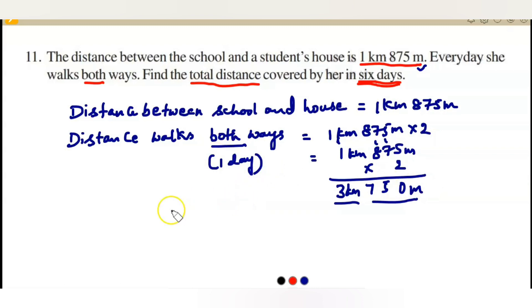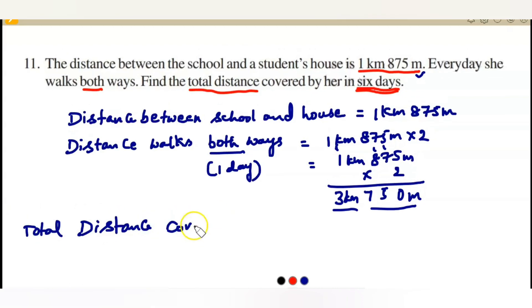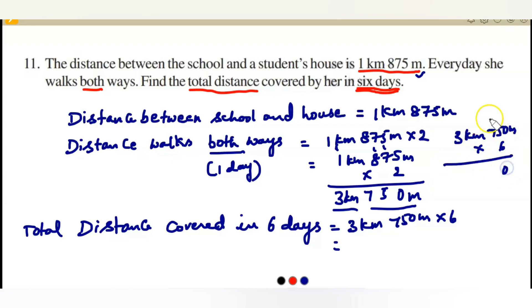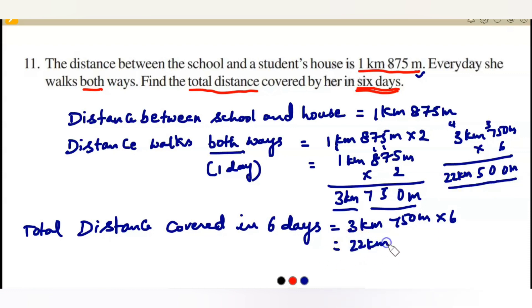Now the total distance covered in 6 days equals 3 km 750 m multiplied by 6. Multiplying: 6 zeros are 0; 6 fives are 30, carry 3; 6 twos are 12 plus 3 is 15 — giving 500 meters; 6 threes are 18 plus 4 is 22 kilometers. So in 6 days she walks 22 kilometers 500 meters.